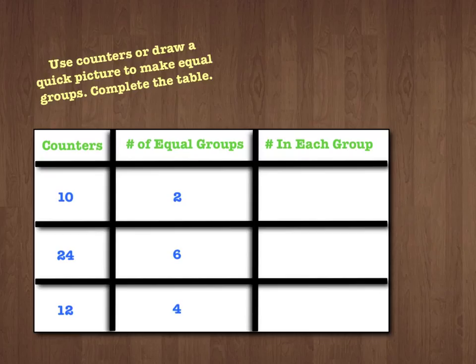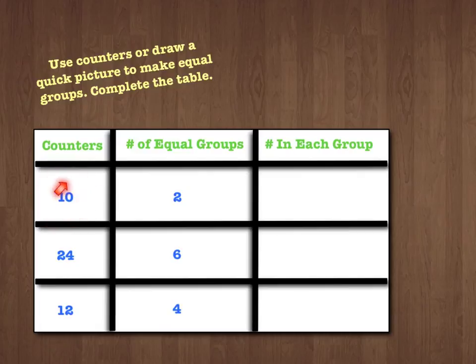Now let's look at this table. We're going to use counters or draw a quick picture to make equal groups, and then we're going to complete the table. How many counters will we use for this problem? We have 10 counters, and we need to put them into 2 equal groups.